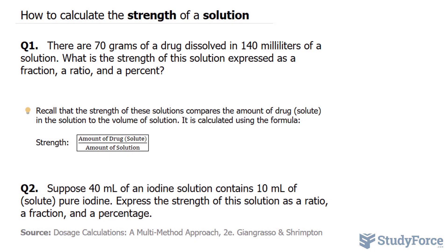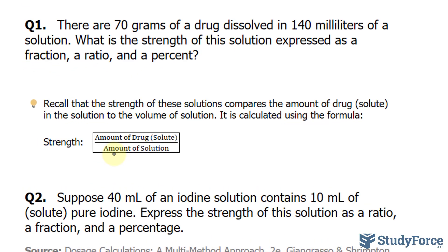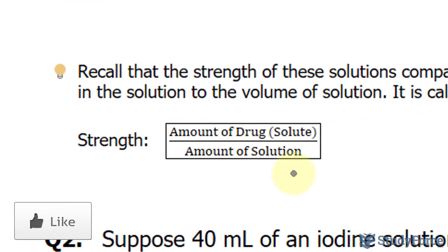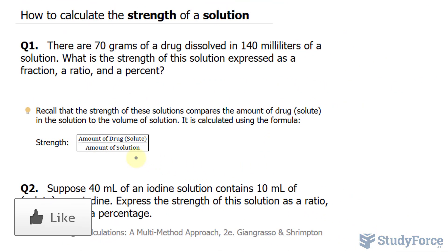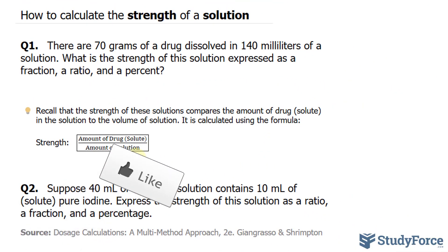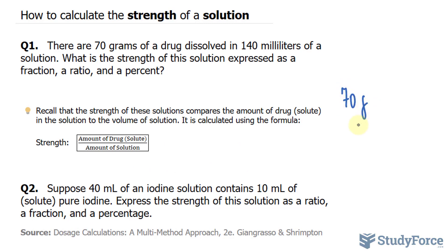What you need here to be successful is the formula where the strength of a drug is defined as the amount of drug — the solute — divided by the amount of solution. So we have 70 grams of this drug, and to find the strength, you divide this by the amount of solution, which is 140 milliliters.